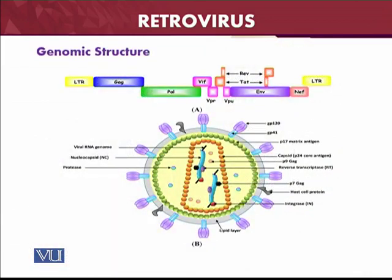From the genetic point of view, the genomic structure of the retroviruses includes different kinds of proteins: glycoproteins gp120 and gp41 for the envelope spikes, p17 matrix antigen, capsid protein p24, and p9. The gag proteins are again there, along with reverse transcriptase, host cell proteins, and the integrase enzyme to integrate with the host cells. You can also see the genomic structure of the virus in the diagram given below.